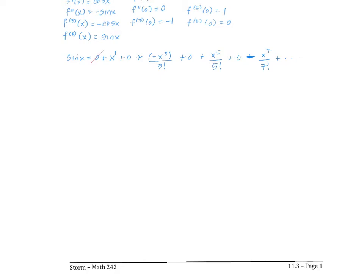I'm going to ignore all the zero terms and look for a pattern in what remains. I notice: x to the first over 1 factorial, x cubed over 3 factorial, x to the fifth over 5 factorial, x to the seventh over 7 factorial — all odd powers. There's a plus-minus-plus-minus alternating sign, so I'll have a negative one to some power. The first term is positive, so I'll start with k equal to one.